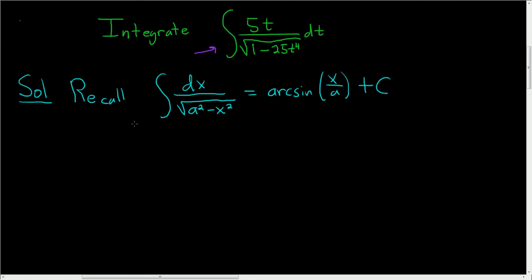in a way that somehow matches this formula. So we have the indefinite integral of 5t divided by the square root. We can write 1 as 1 squared minus, and we can write 25t to the fourth as 5t squared squared dt,